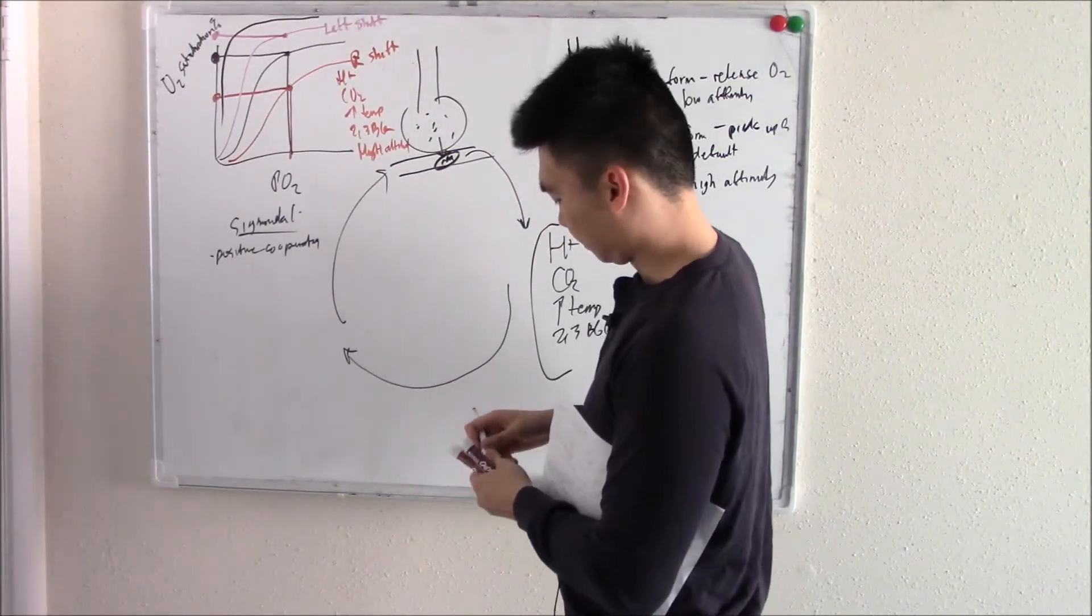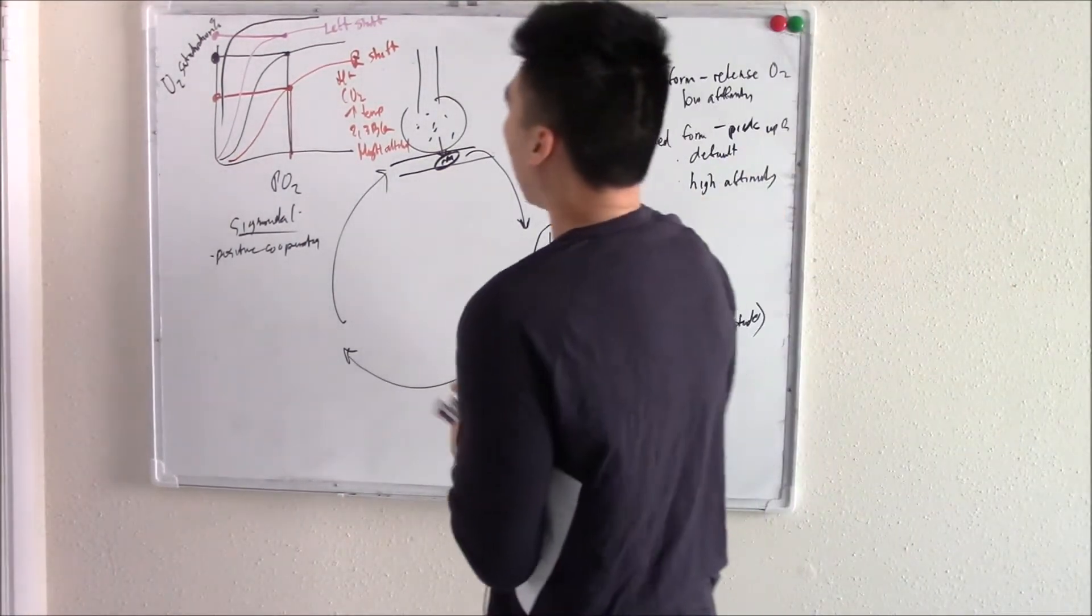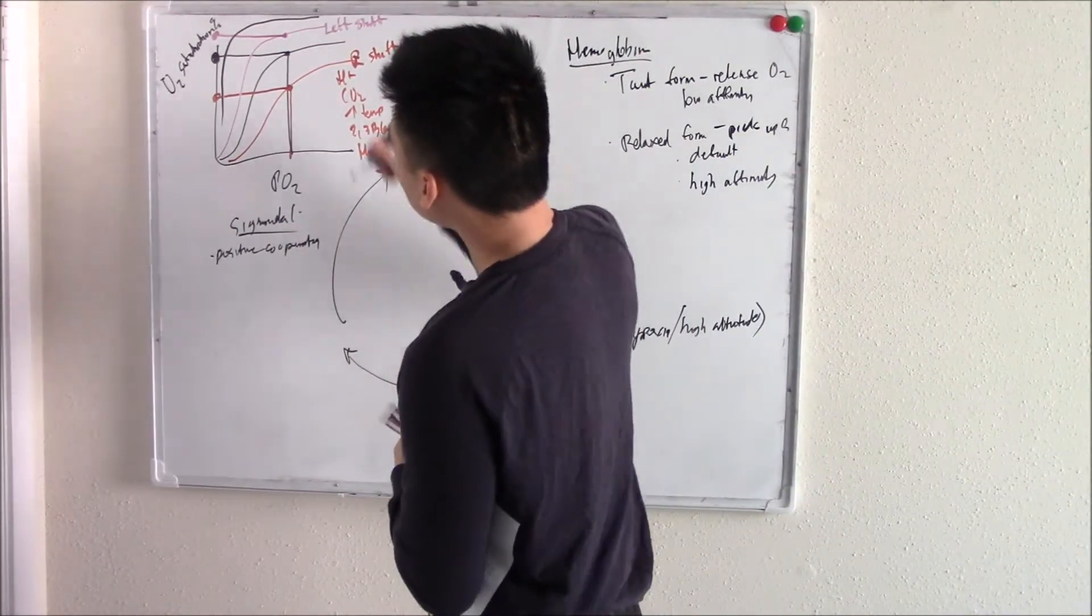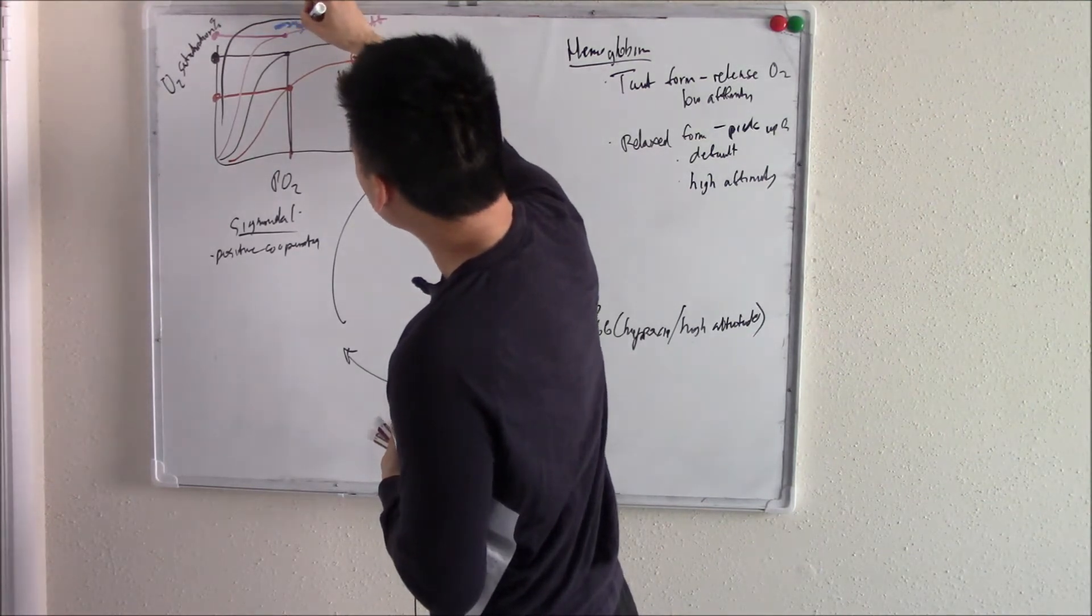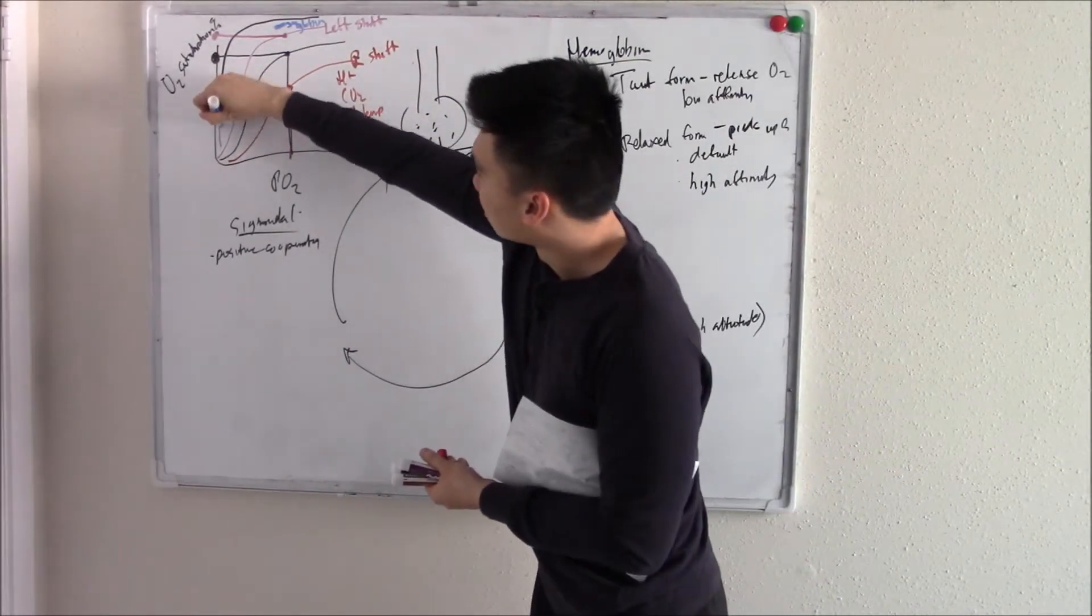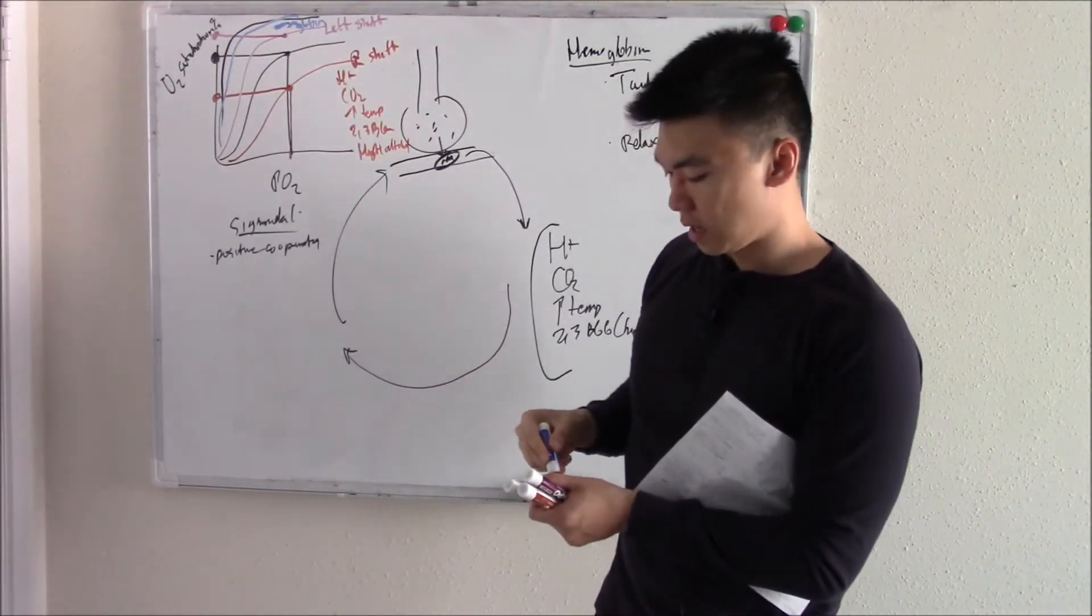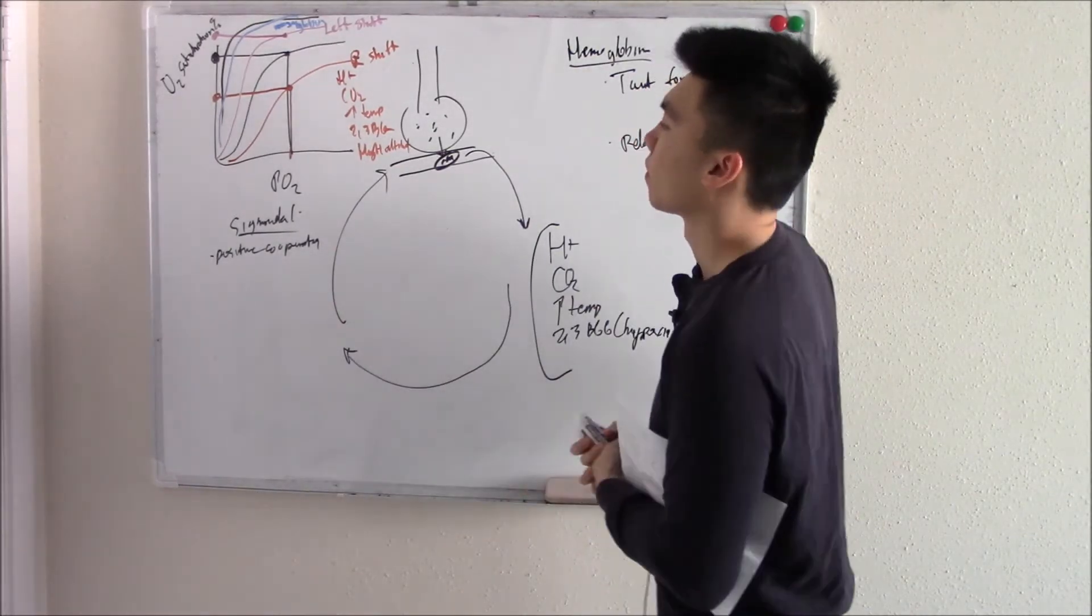Your myoglobin, which also can bind oxygen, doesn't do this. It just kind of binds it and then levels out. So this top graph will be your myoglobin. I've seen charts where none of this is labeled and they'll just show this myoglobin chart and say, where is this found? It's found in your muscles.